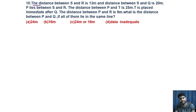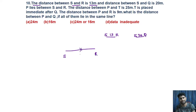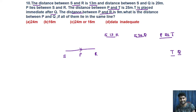Next is a distance concept question. The distance between S and R is 13 meters. SQ is 20 meters. P lies between S and R — not exactly in the middle. The distance between P and T is 25 meters. T is placed immediately after Q. The distance between P and R is 9 meters. Since P-R is 9 and S-R is 13, we confirm S-P is 4 meters. We now have confirmed the S-R positions and distances.